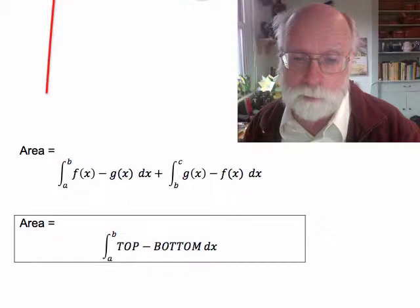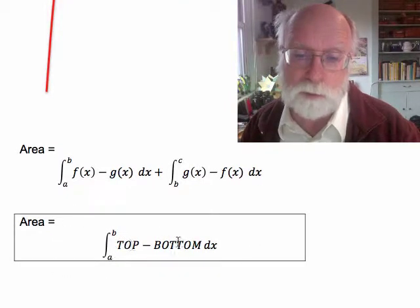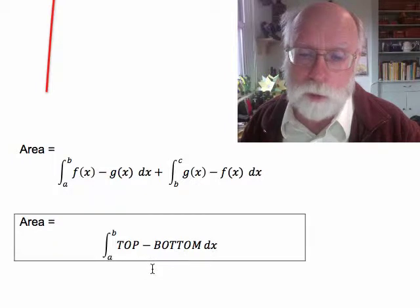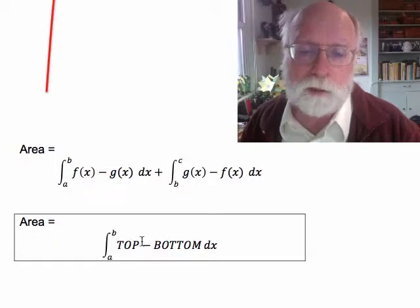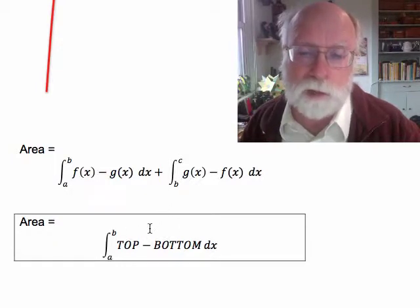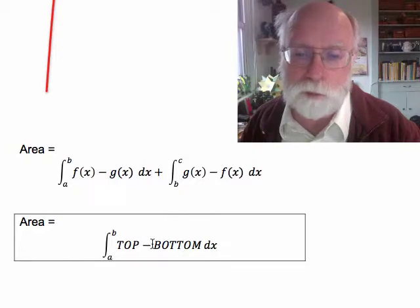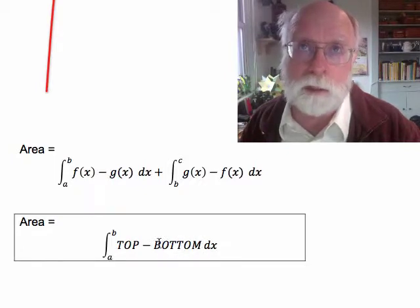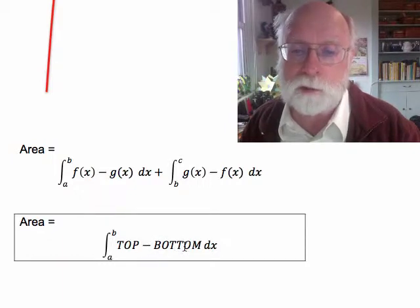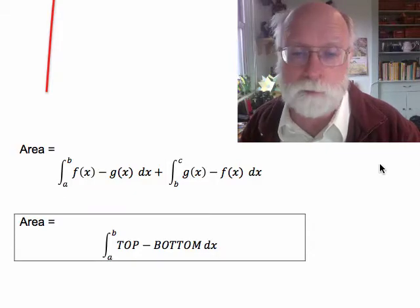For area problems, the formula is always the integral of the top minus the bottom between the values of x, a, and b. If you're wondering how this relates to our first formulation of area problems, where we talk about a positive function and ask for the area under the curve, we're using the x-axis as the bottom function. And the formula for the x-axis is y equals zero. So there isn't actually a bottom term here because it's equal to zero in that case. And then we're just integrating the top. And that's the simple form of this particular formula.